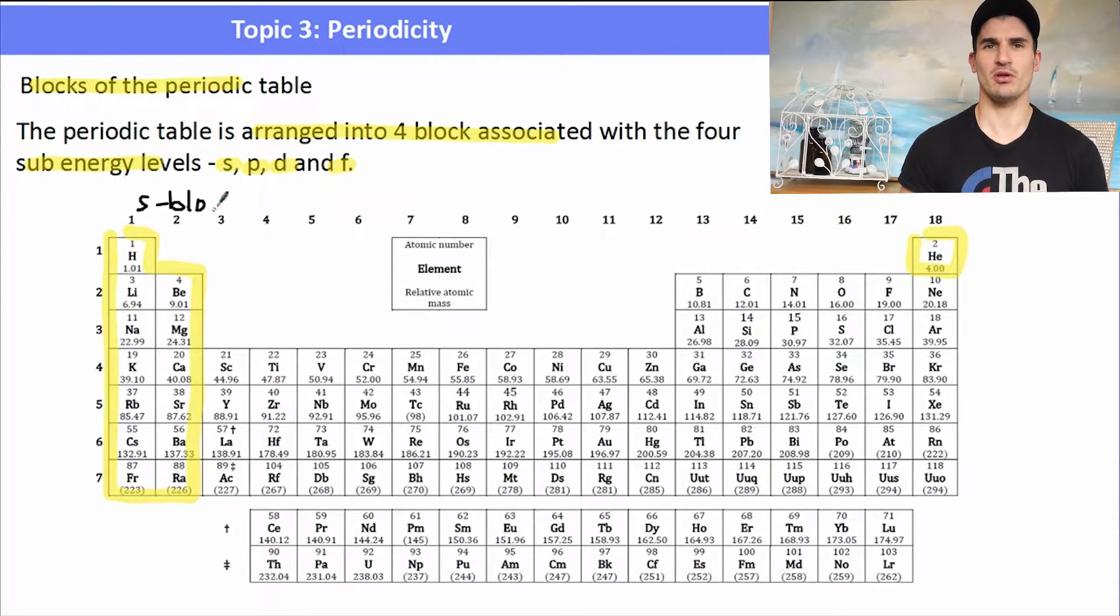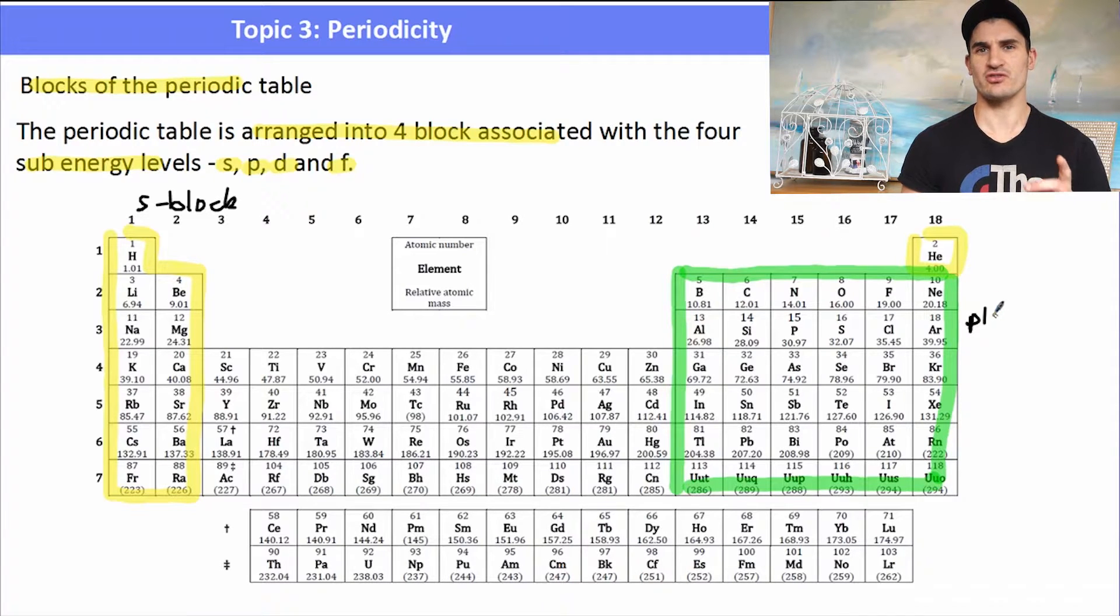The P block is groups 13 through to 18. These are the ones that fill the P subshell. Just remember that it's not helium, because helium is an S, but the rest of that block is a P. The D block - well, that is the transition metals, the big group in the middle of the periodic table that fills up the D orbitals. Remember that the D orbitals have 10 electrons in their shell, so they can fill up to 10.